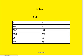So let's see if it works. 250 minus 5 equals 245. 280 minus 5 equals — 58 minus 5 equals 53. And 40 minus 5 equals 35. So the rule is y equals x minus 5.